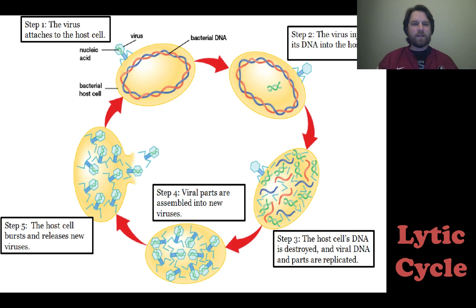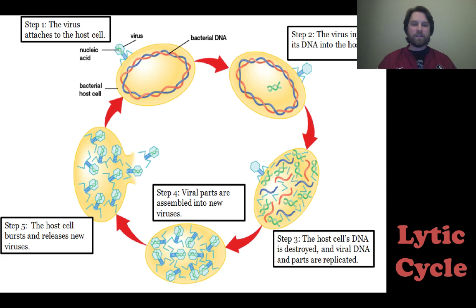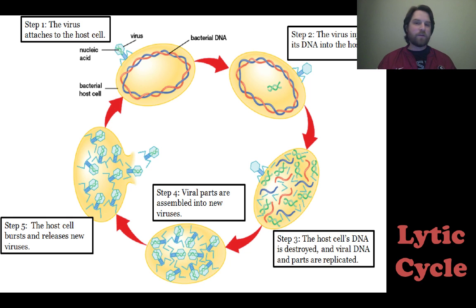So let's look at the first one, which is the lytic cycle. You can see in this graphic, the steps going clockwise from the top left. What the virus does is it attaches to the host cell and then injects its DNA — or genetic material, it could be RNA — into that host cell. The host cell's DNA gets destroyed and the viral DNA is the only DNA that's left. Then the viral parts are assembled into new viruses, and the host cell bursts, or goes through lysis, forming all these new viruses that go out and infect other cells. That's why it's called the lytic cycle — because lysis is going to occur. Basically, the virus takes over the cell and that cell becomes a little virus-producing factory.